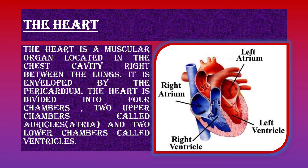The heart is a muscular organ located in the chest cavity right between the lungs. It is enveloped by the pericardium. The heart is divided into four chambers: two upper chambers called auricles or atria, and two lower chambers called ventricles.